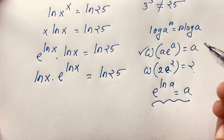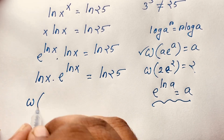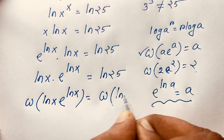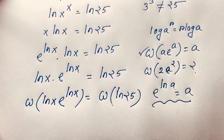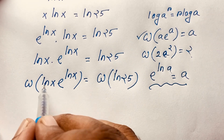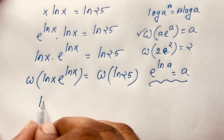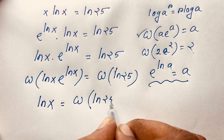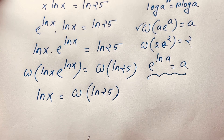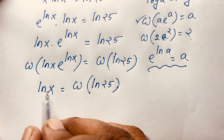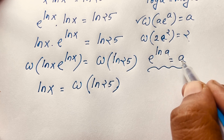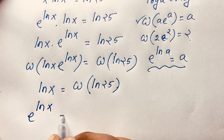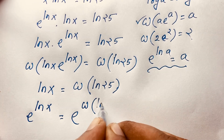Now I apply the Lambert W function to both sides. So Lambert W of ln x times e to the power ln x is equal to Lambert W of ln 25. We know that W(a·e^a) = a, so here a is ln x. Therefore, ln x is equal to Lambert W of ln 25. To find x, I apply e to both sides: e to the power ln x is equal to e to the power Lambert W of ln 25.